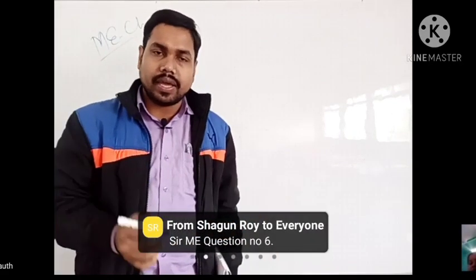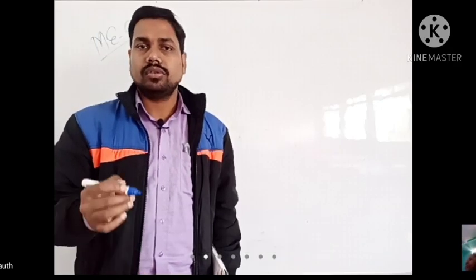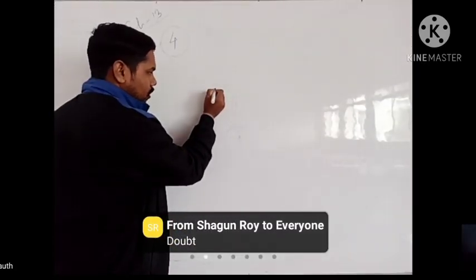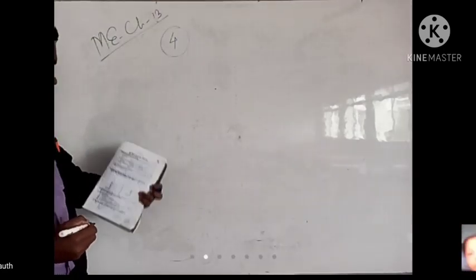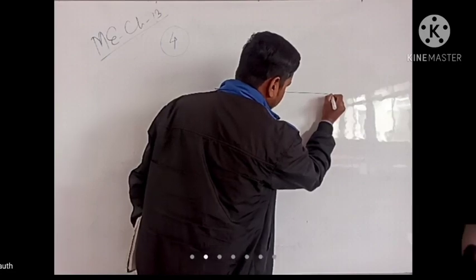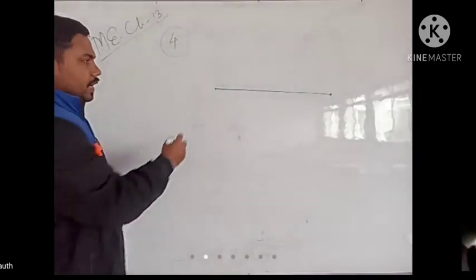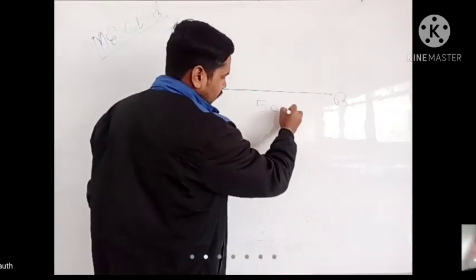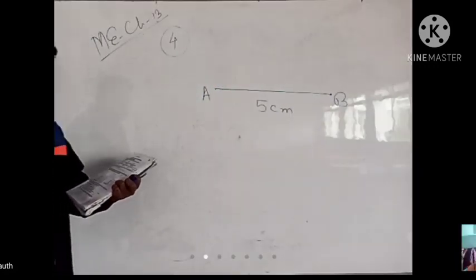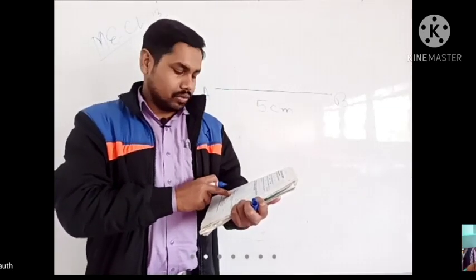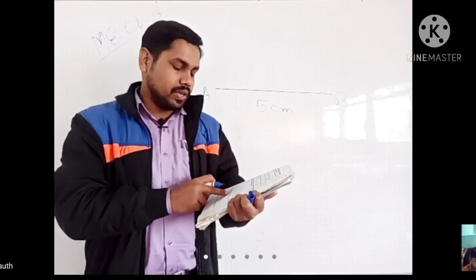So, you have to draw a line segment of 5 cm length. You have to place a line segment of 5 cm length and give the name as A and B. This length is 5 cm, so you have to write here 5 cm. Now, in this question it is asking: mark point C on AB such that AC is equal to 3 cm, and measure CB — how long is CB.